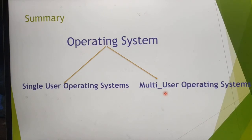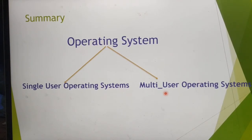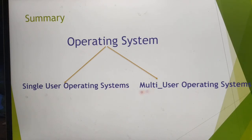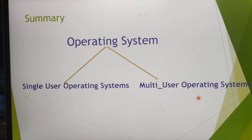Finally, let's see the summary of this video. We have seen two different types of operating system: first is single user operating system, and second is multi user operating system. Single user operating system allows a single user to do the task at a time, but multi user operating system allows multiple users at a time to do the task. Thank you, students.